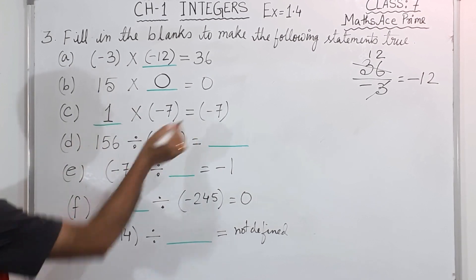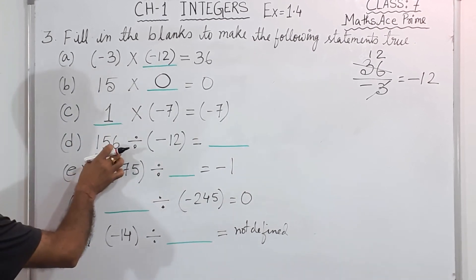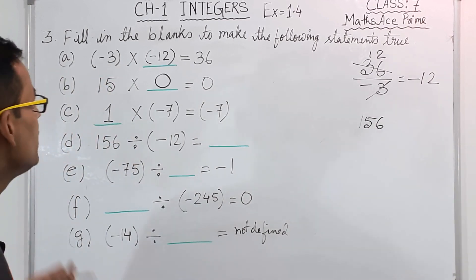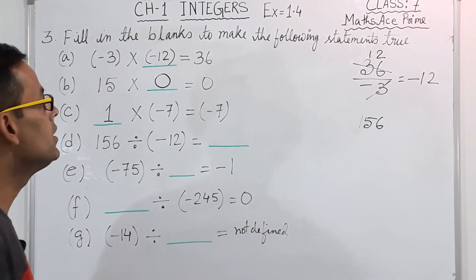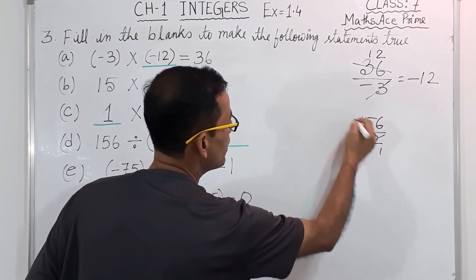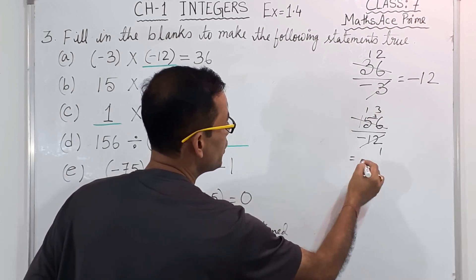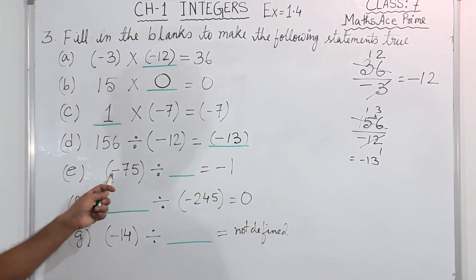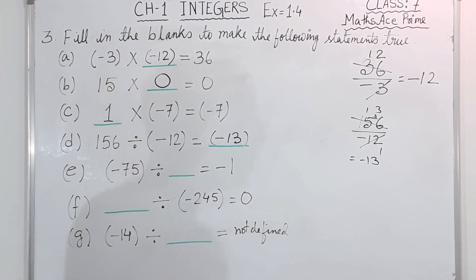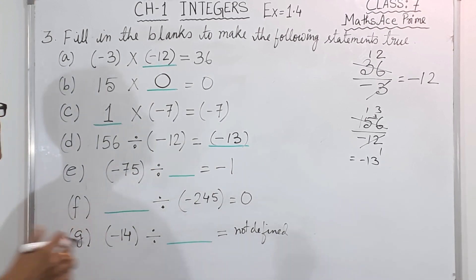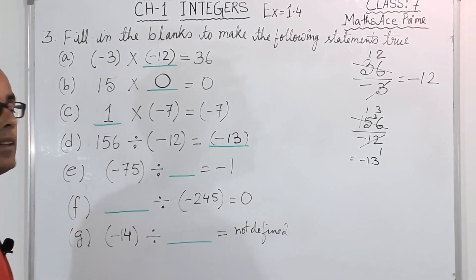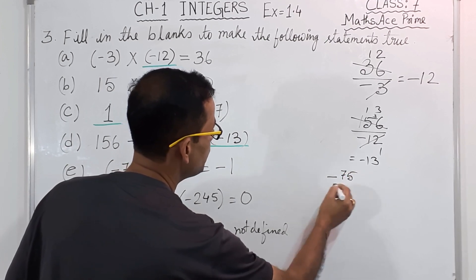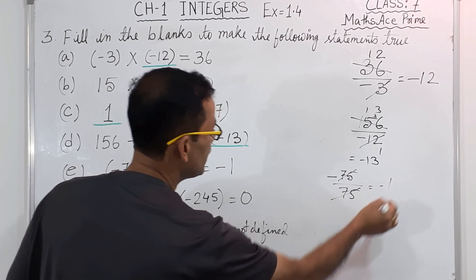Next: 156 divided by minus 12. You can do rough work if you want. 156 divided by minus 12 will be minus 13. Then: minus 75 divided by what will be minus 1? You have to divide it by 75. See, minus 75 divided by 75 gives minus 1.